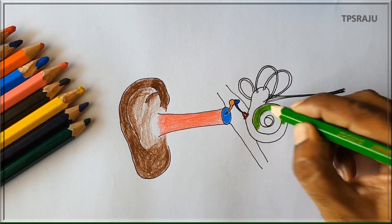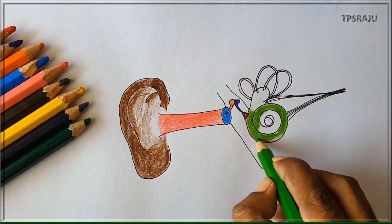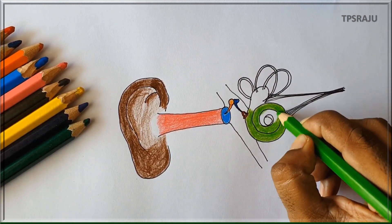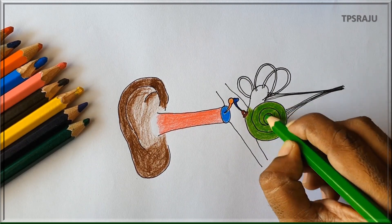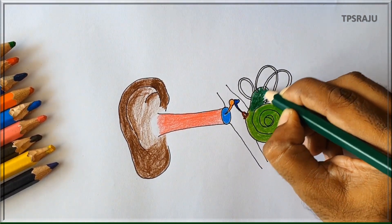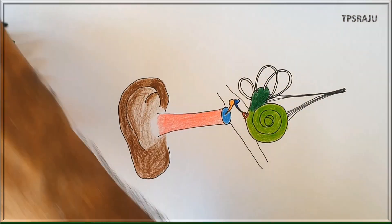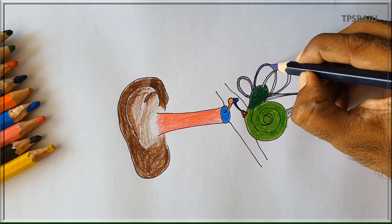Applying green color to cochlea, blue color to vestibular nerve, dark green color to vestibule, violet color to semicircular canals.